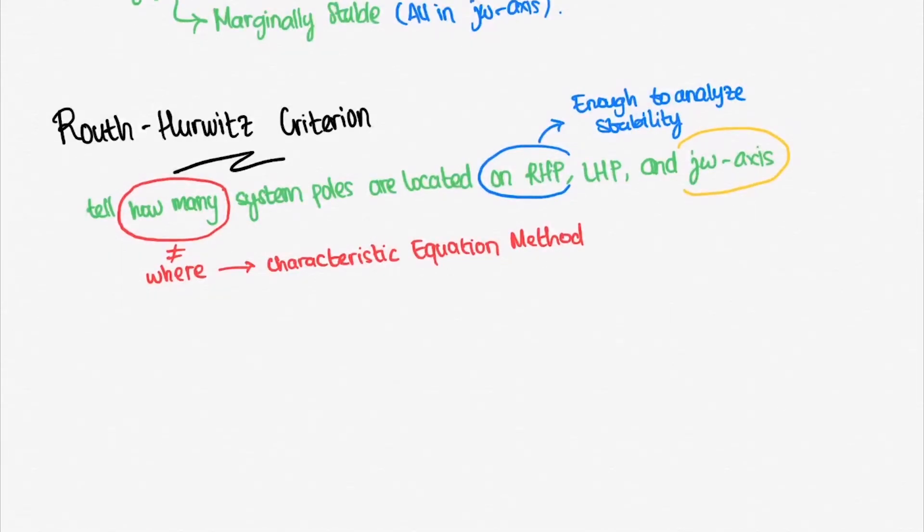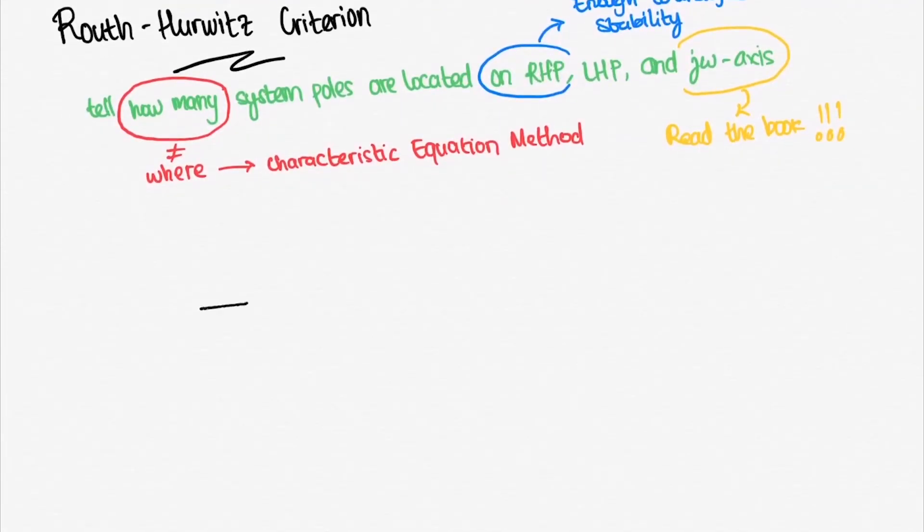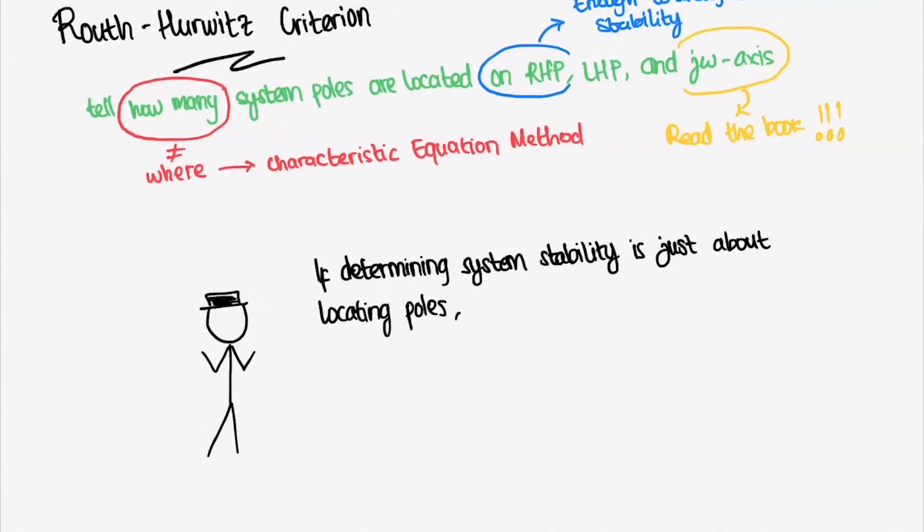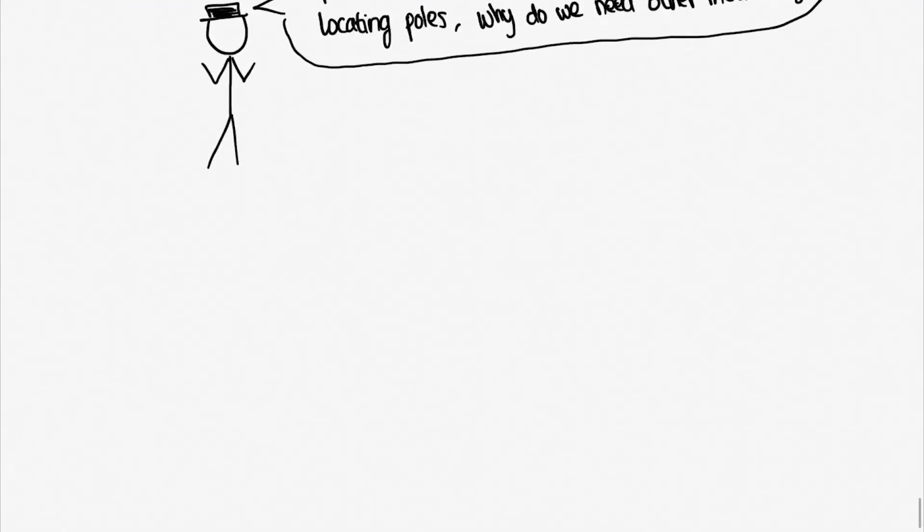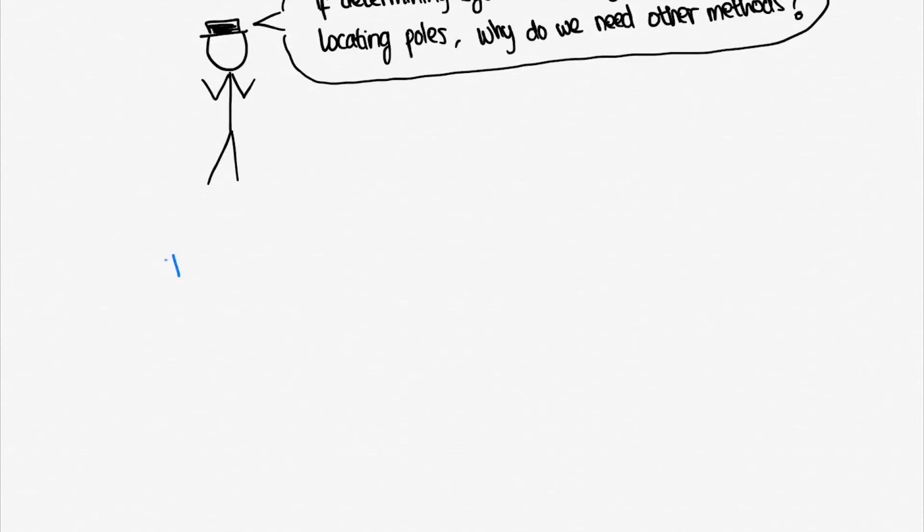In this video, we're not going to discuss how to count the number of poles that sit on the imaginary axis, but we will only count the number of poles that sit on the left half plane and right half plane. If you're curious about it, you can always take a reference from the book. Well, this method may raise questions. Like, if determining system stability is just about locating the system's poles, then why do we need other methods? Using characteristic equation will be enough.